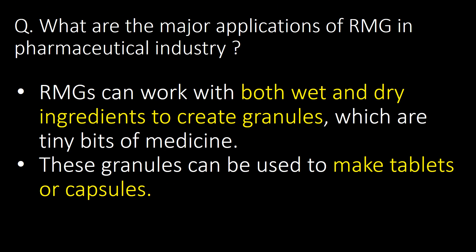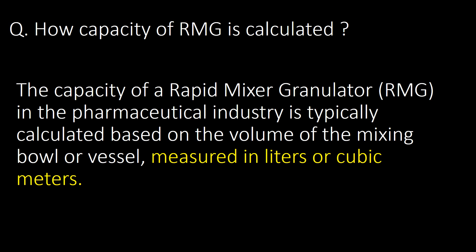What are the major applications of RMG in the pharmaceutical industry? RMGs can work with both wet and dry ingredients to create granules, which are tiny bits of medicine. These granules can be used to make tablets or capsules. The capacity of an RMG is typically calculated based on the volume of the mixing bowl or vessel, measured in liters or cubic meters.